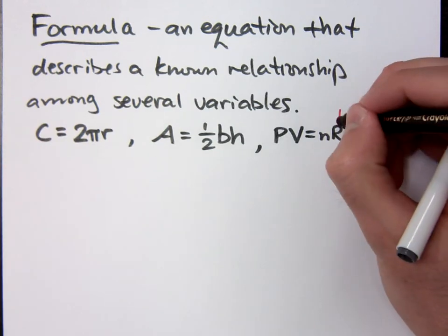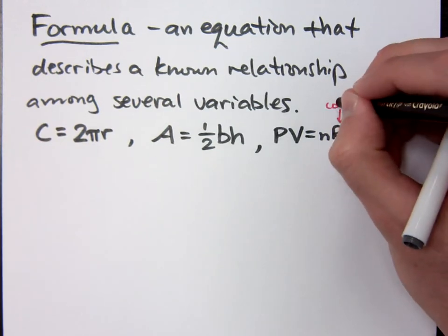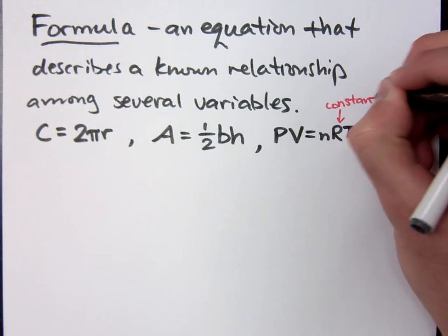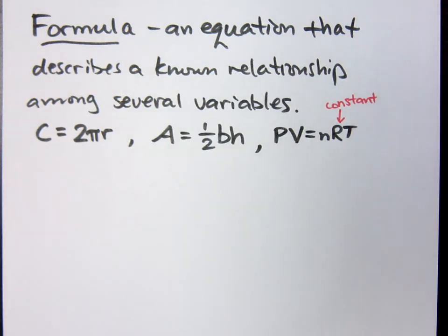Now in this formula, this R here is the constant. That means every time you're working with that formula, PV=nRT, R is always the same. We're not going to use this in our class, but pressure, volume, number of moles, and temperature, they're all connected through this formula.